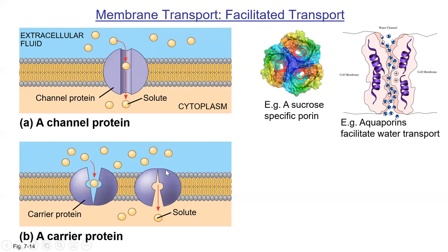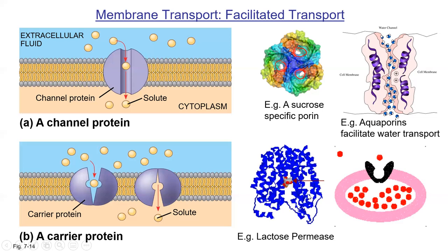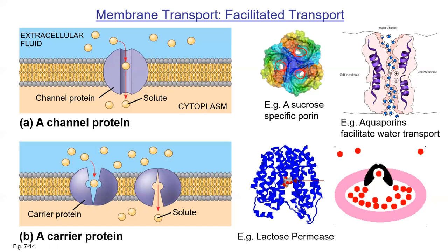Carrier proteins are like hinged gates — they open and close. Lactose permease is an example. Molecules go in one side, the gate moves and hinges, and they exit the other side. Lactose usually goes into cells, not out, but the mechanism illustrates the principle.